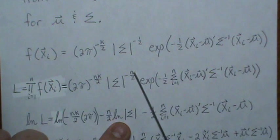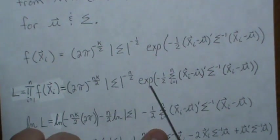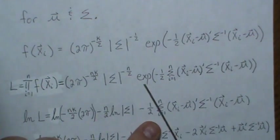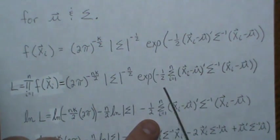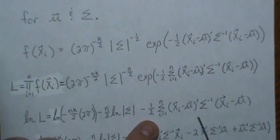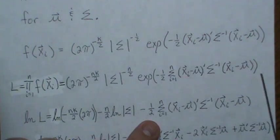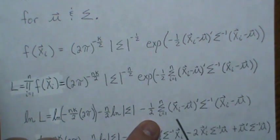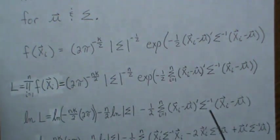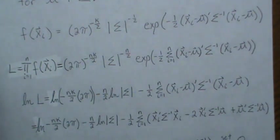So we take the log of this first piece and the log of this, and that comes out front. Log and exponentiation or the E function cancel, leaving just what's in the exponential exponent. Then we just rewrite it.